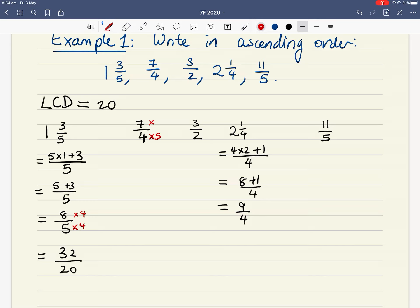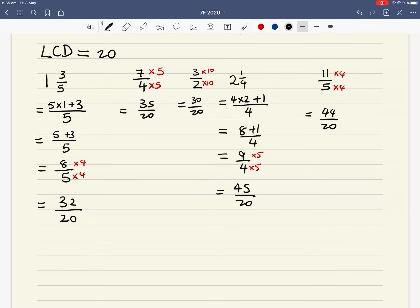I need to do the same for the second fraction, 7 over 4. So 4 times 5 gives me 20. What I multiply to the bottom, I need to multiply to the top as well to keep everything balanced. So that gives me 35 over 20. 3 over 2, times 10 times 10, because 2 times 10 gives me 20, so that's 30 over 20. 2 and a quarter, which is the same as 9 over 4, 9 quarters, times 5 times 5, because 4 times 5 gives me 20, so 9 times 5 is 45 over 20. And then we have 11 over 5, which is times 4 times 4, so I get 44 over 20.